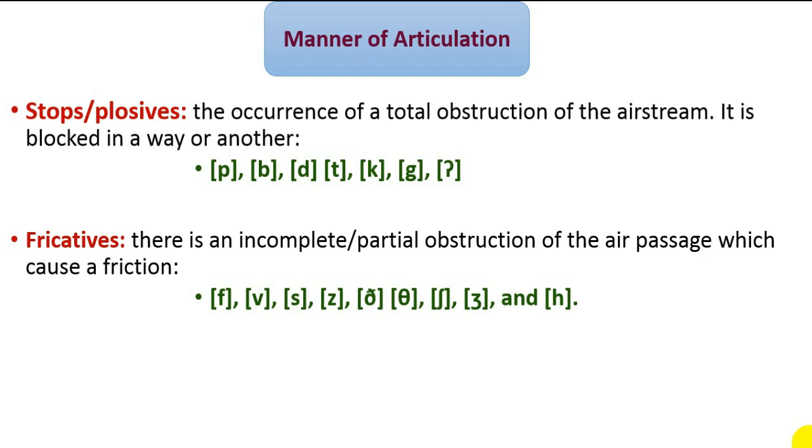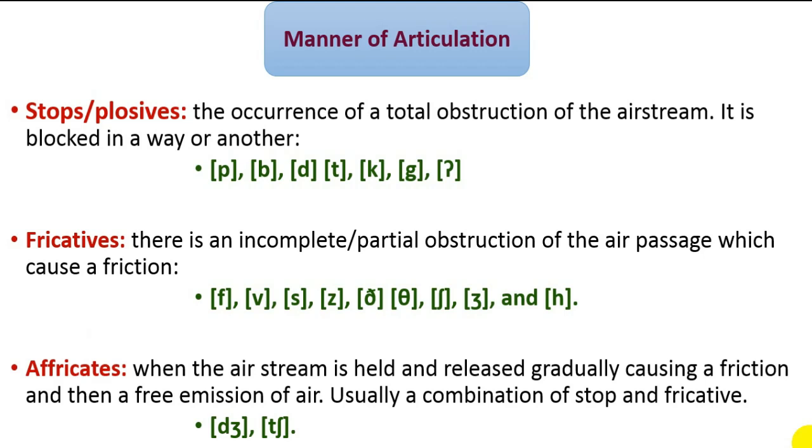Affricates: an affricate is a sound, the production of which involves two manners of articulation. Initially, the air is blocked completely, then it is slowly released. Put differently, the airstream is held and released gradually, causing friction and then free emission of air—usually a combination of stop and fricative. Examples are CH and J.